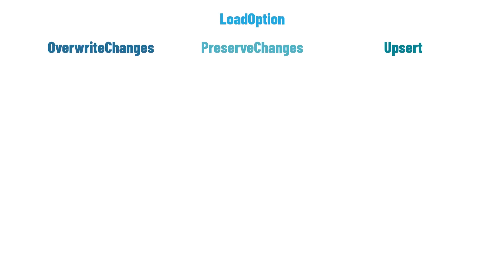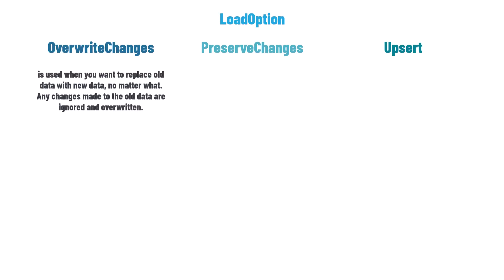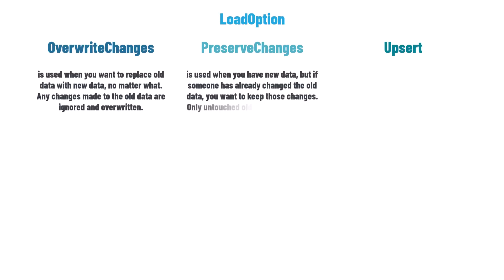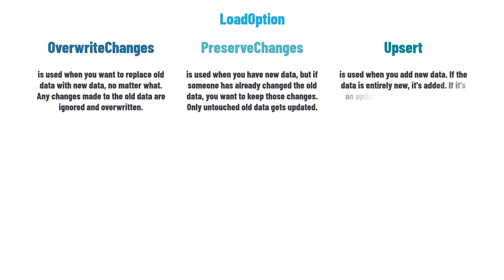The load option determines how the data gets copied. OverwriteChanges is used when you want to replace old data with new data no matter what — any changes made to the old data are ignored and overwritten. PreserveChanges is used when you have new data, but if someone has already changed the old data, you want to keep those changes — only untouched old data gets updated. Upsert is used when you add new data: if the data is entirely new, it's added; if it's an update to existing data, the old data is updated.